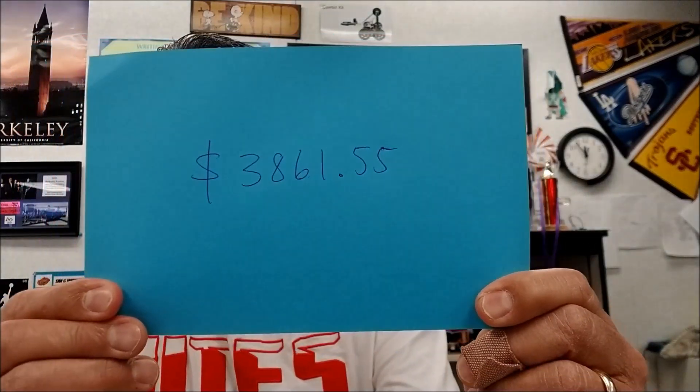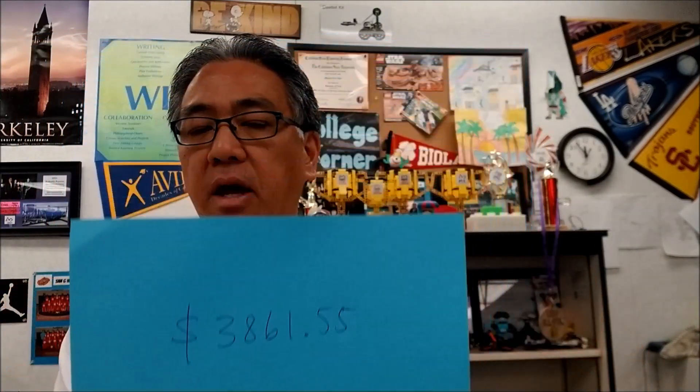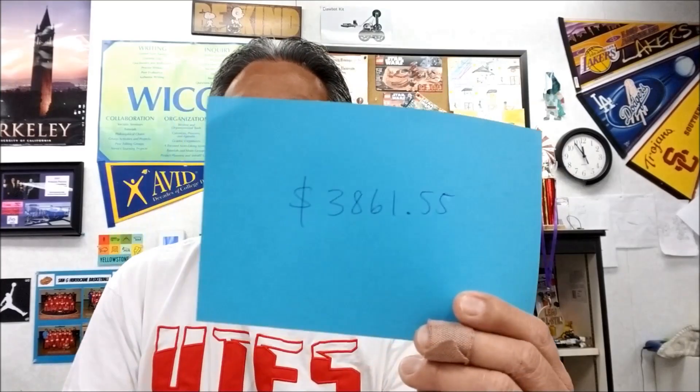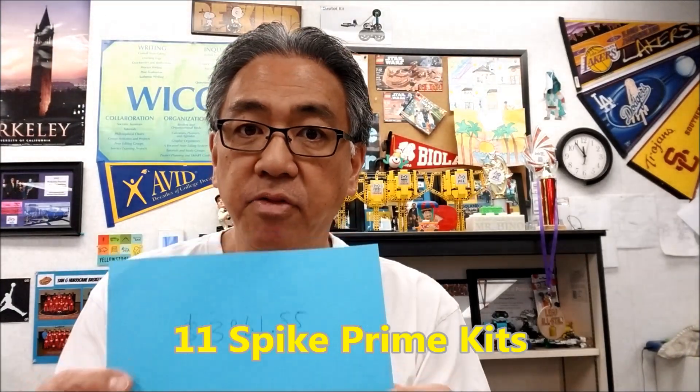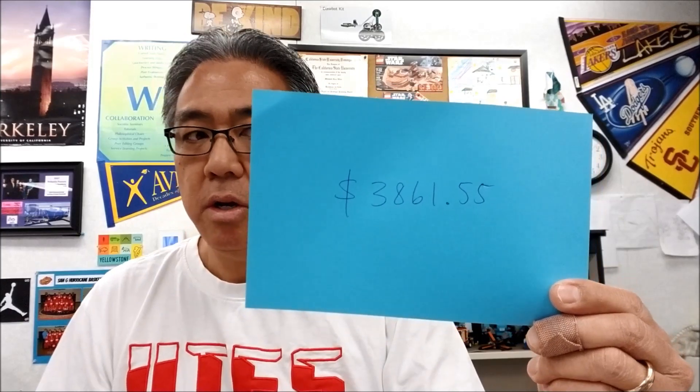This year from the state of California I received three thousand eight hundred sixty-one dollars and fifty-five cents to spend on my students — getting more Lego Mindstorms EV3 kits, more expansion kits. I teach a Robotics 2 class, I bought more VEX Robotics last year, and for those of you who know that Spike Prime is coming out, I bought eleven kits of the Lego Spike Prime with this money. And knock on wood, I should get this amount again next year.